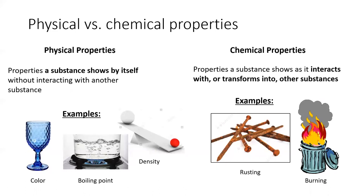To determine whether something is a physical or chemical property, it's helpful to ask whether the substance is interacting with another substance. A physical property is displayed by a substance all on its own. Examples of physical properties include color, boiling point, density, weight, and size.